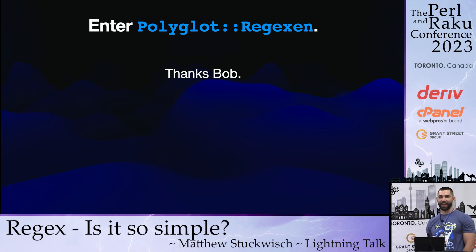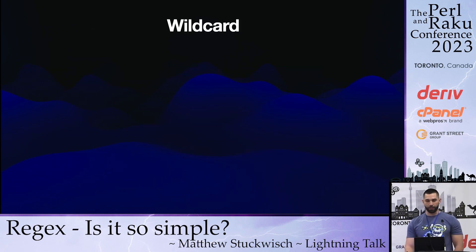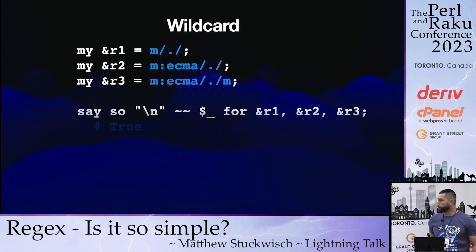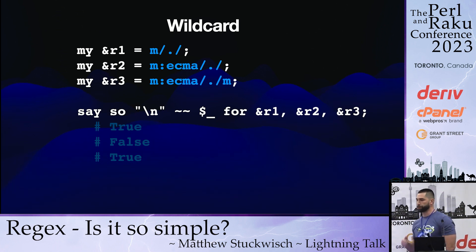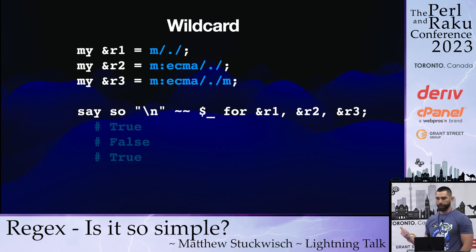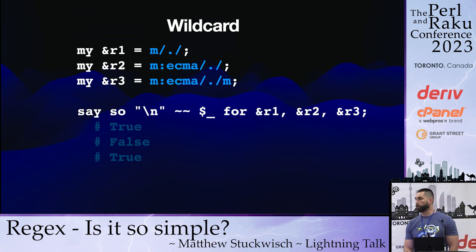This literally came out of a conversation I had with him last year at TPRC in Houston. So, let's say we have a wildcard. Here's my code. I'm just going to say with the new line, and we'll get true, false, and true. What's the difference? Well, this is in Raku, not in Perl. In Raku it does match anything, so we get true. But in ECMA it doesn't — except when it's in multi-line mode, in which case then it does. All we do is put that in and tell it which language we want it to work in. This works inline in Raku.